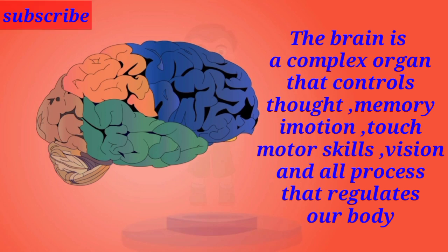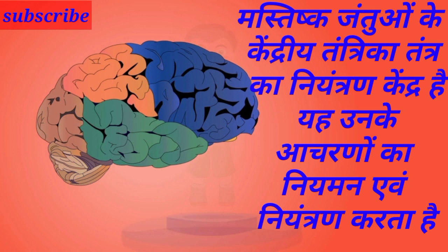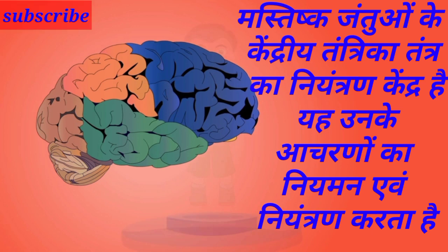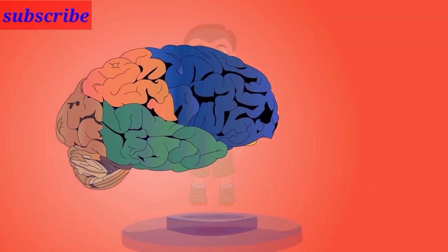The brain regulates all processes of the body. It is the control center of the central nervous system and governs and controls all bodily actions and behaviors.